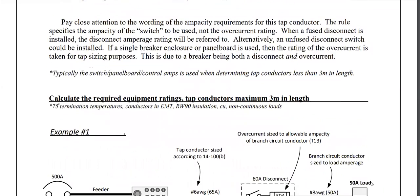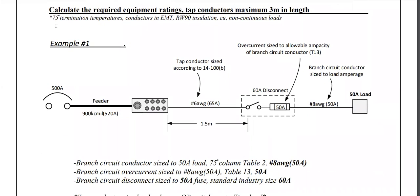Here's a classic example: a large feeder from a large overcurrent, a splitter, a tap conductor, a fusible disconnect, a branch circuit wire, and a load. The first step is to determine — given the load — the size of the conductor necessary to supply it. The branch circuit conductor is sized based on 50 amps for non-continuous loads. Going to the 75-degree column of Table 2, we end up with a number 8 AWG, good for 50 amps. We start at the load and work our way back to the tap conductor.